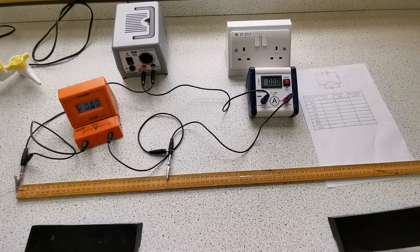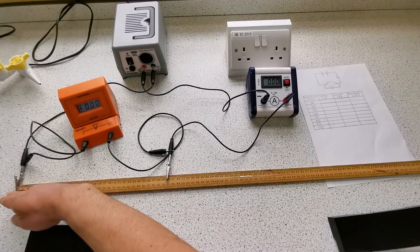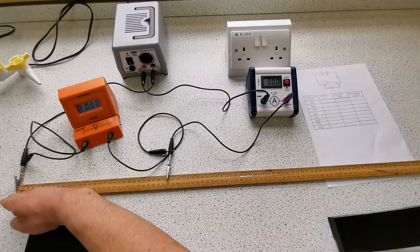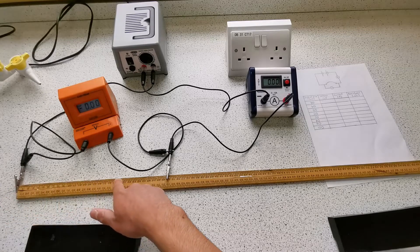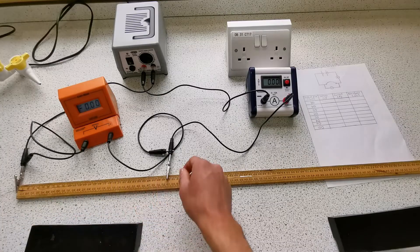So here we have the circuit set up. I have the power pack which is connected to this crocodile clip here, which is attached to the wire at the 0cm mark on the ruler. I have the wire itself that's running along the top of the ruler—this is how I can tell the length of the wire.